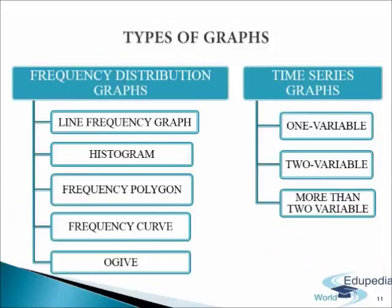Frequency distribution graphs: in these graphs, data are expressed in terms of distribution of frequency into class intervals. The frequencies are plotted along the y-axis and class limits are taken on the x-axis. These graphs are further classified as line frequency graph, histogram, frequency polygon, frequency curve, and Ogive.